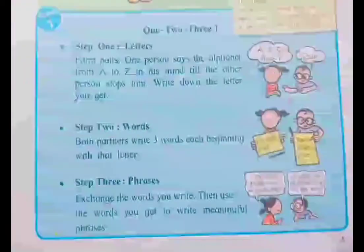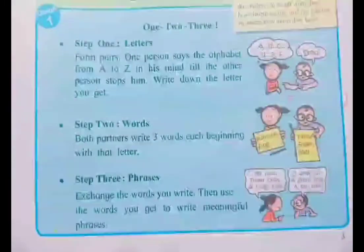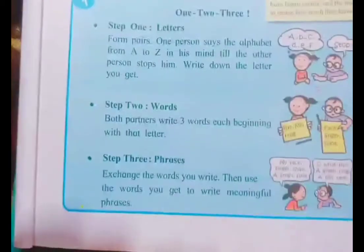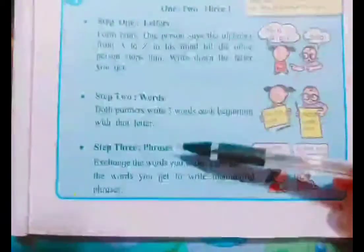It's about the alphabet and letters. Actually this is a group game, but since we are not working in a group, we are going to see what we can do in this game. It's a very simple game. You have to write A to Z, and then in the second step you have to write words from those letters. In the third step you are going to write phrases or sentences.